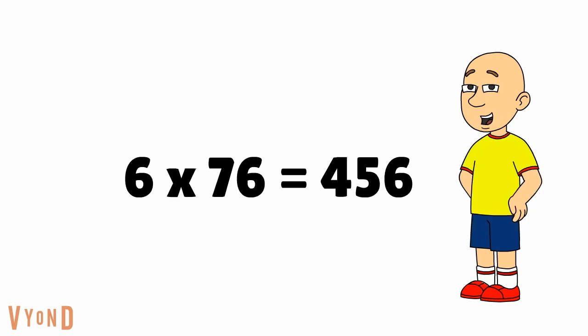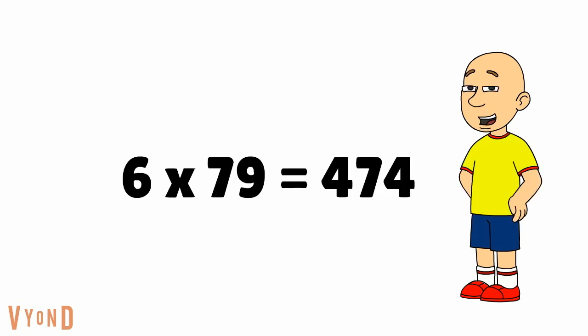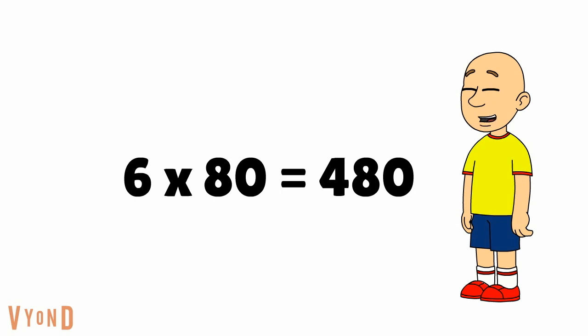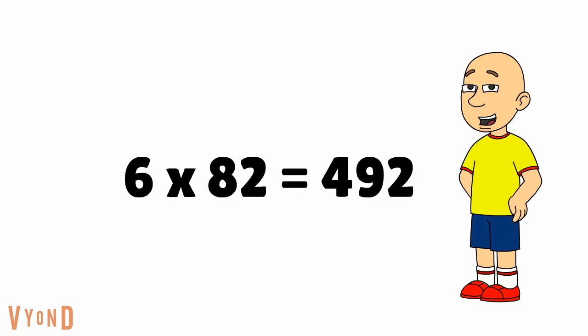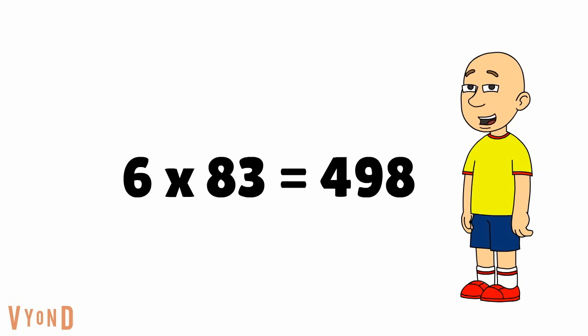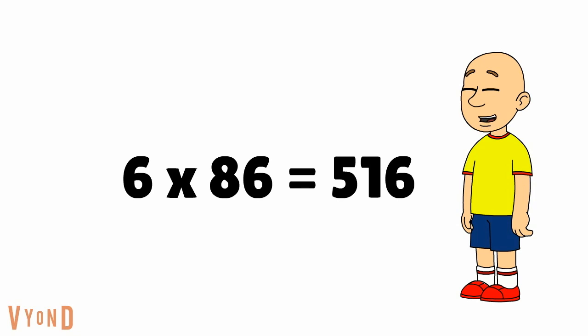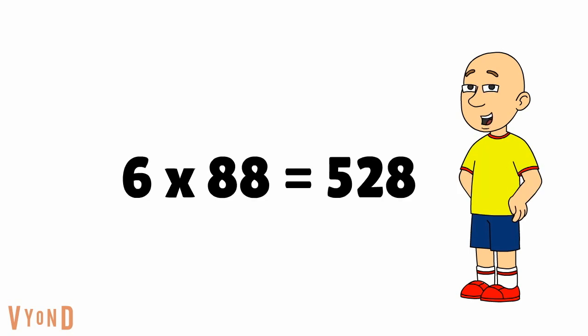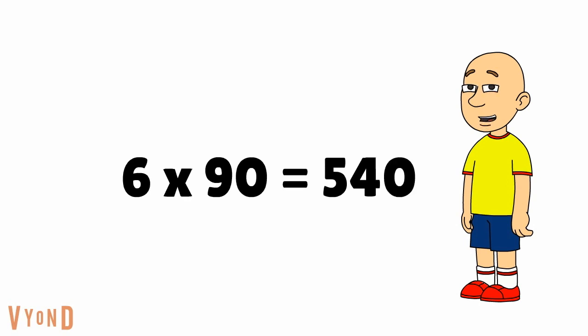6 times 76 equals 456. 6 times 77 equals 462. 6 times 78 equals 468. 6 times 79 equals 474. 6 times 80 equals 480. 6 times 81 equals 486. 6 times 82 equals 492. 6 times 83 equals 498. 6 times 84 equals 504. 6 times 85 equals 510. 6 times 86 equals 516. 6 times 87 equals 522. 6 times 88 equals 528. 6 times 89 equals 534. 6 times 90 equals 540.